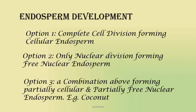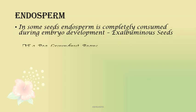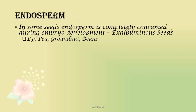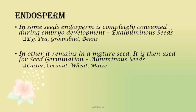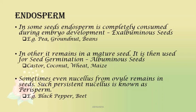Have you seen a coconut? In coconut, the water is the free nuclear endosperm and the white part is the cellular endosperm. In some seeds, endosperm is completely consumed during embryo development — such seeds are known as exalbuminous seeds, for example pea, groundnut, and beans. In others, some endosperm remains even after the embryo has matured and is used for seed germination — such seeds are known as albuminous seeds, for example castor, coconut, wheat, and maize. Sometimes the nucellus from the ovule also remains in seeds — such a persistent nucellus is known as perisperm, for example black pepper and beet.